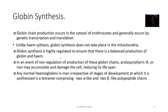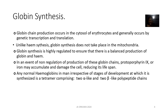Globin synthesis is highly regulated to ensure that there is a balanced production of globin and heme. In an event of non-regulation of production of these globin chains, protoporphyrin 9 or iron may accumulate and damage the cell.